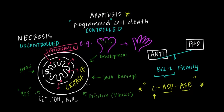Caspases can also activate other enzymes like nucleases that break down DNA. The eventual result is a whole-scale degradation of the large polymers inside the cell. One unique feature of apoptosis is that these degraded polymers can be recycled by surrounding cells, which can phagocytose or engulf them and reuse those amino acids and nucleotide bases in their own cells.